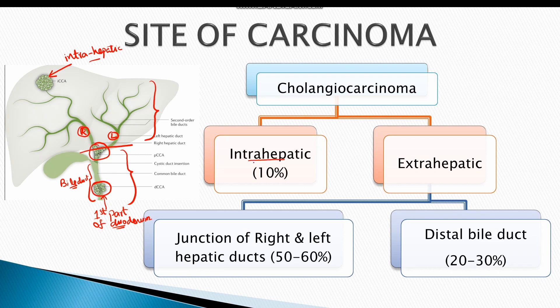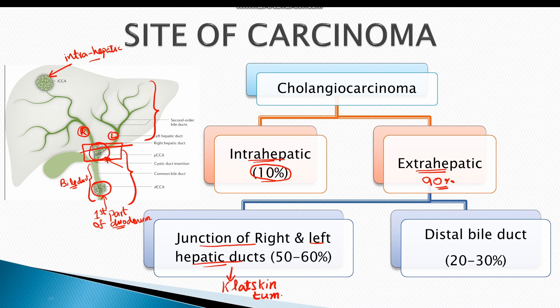Intrahepatic cholangiocarcinoma constitutes almost 10% of all cholangiocarcinomas, while extrahepatic cholangiocarcinomas constitute almost 90%. The most common site of tumor formation is at the junction of the right and left hepatic ducts — tumors in this perihilar region are also known as Klatskin tumors, constituting 50–60% of all cholangiocarcinomas. Tumors of the distal bile duct constitute approximately 20–30% of cases.